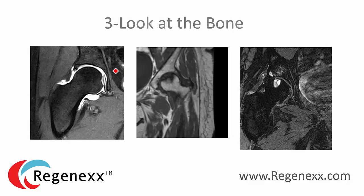Number three: look at the bone. In this area you want to make sure the bone is uniform in color — in this case it's uniformly dark, so that's good. In this next case, the normal bone is white, but this dark area means dead bone, so you're looking for a change in color. Here we have a patient with large cysts on the ball side and the socket side, which is another type of dead bone. Problems in the bone are an indicator of arthritis.